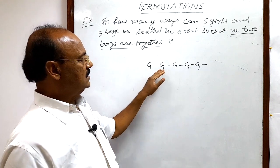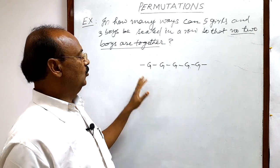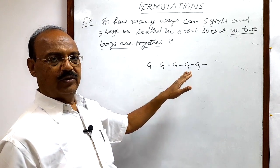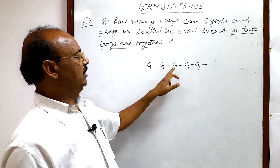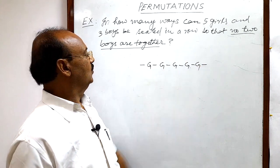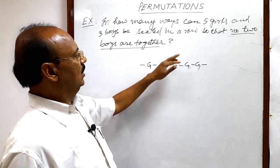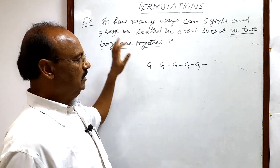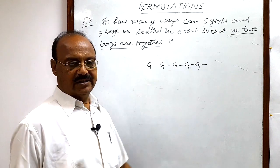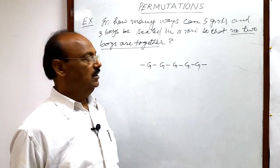So girls can take five seats here and boys, how many seats are available for boys? One, two, three, four, five, six. So number of seats for boys is six but number of boys is three. So how we can get the answer? How we can solve it? Let us see.